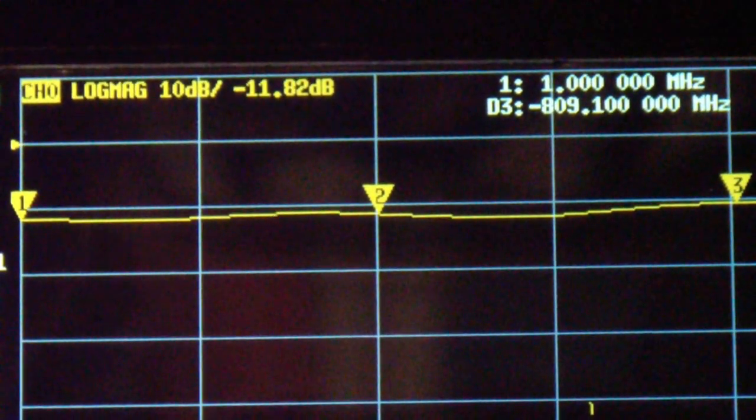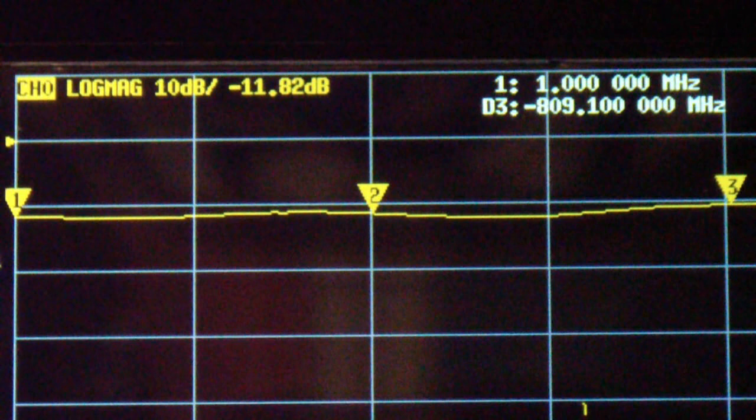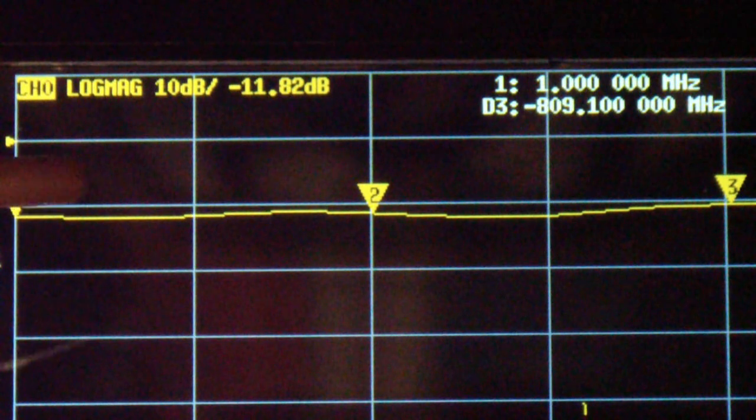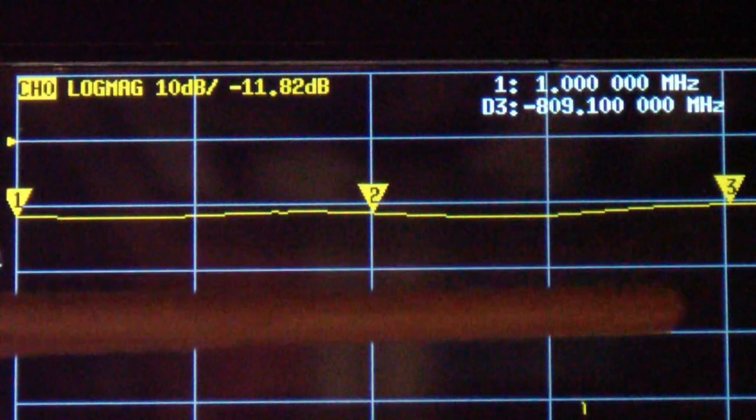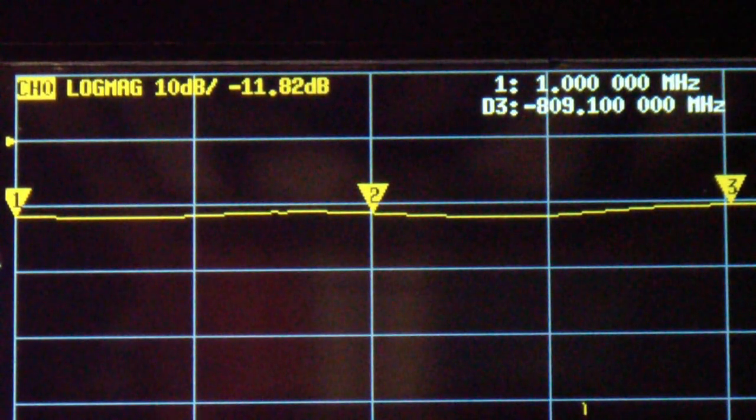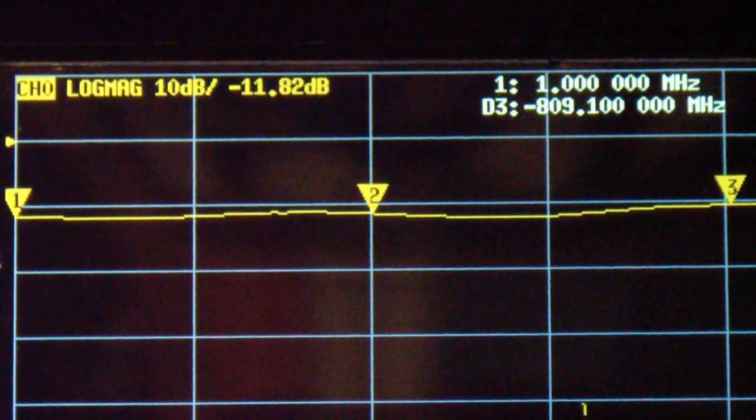Now let's talk a little more about what this plot is. Well this plot is the log magnitude, and it is a transmission measurement. I'll show you a little more about that in a minute and we will review that. It runs from 1 megahertz on the left to 900 megahertz on the right. So what is it showing us the log magnitude of?